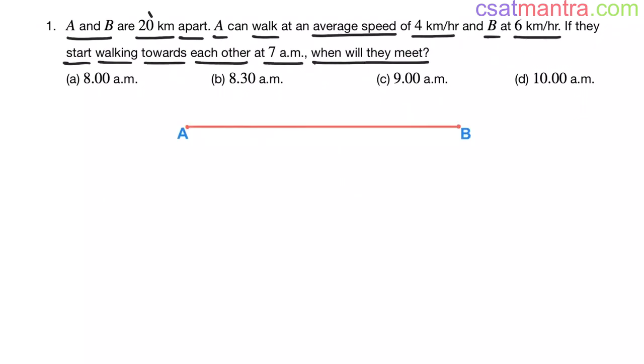Distance between A and B is 20 kilometers. A and B are walking towards each other at 4 kilometers per hour and 6 kilometers per hour respectively. Now, speed of A with respect to B will be 4 plus 6, that is 10 kilometers per hour.